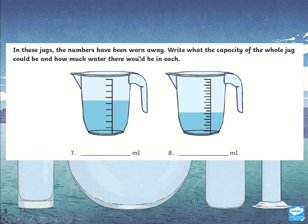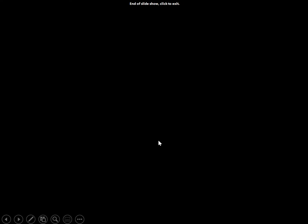See if you can work this one out as well. In these jugs the numbers have been worn away, so you don't even get numbers. You are going to try to write the capacity of what the whole jug could be, and how much you think is in there. Give that one a go — good luck!